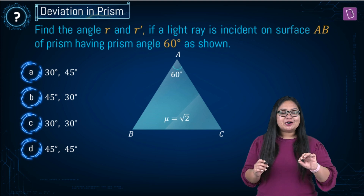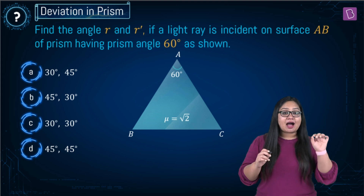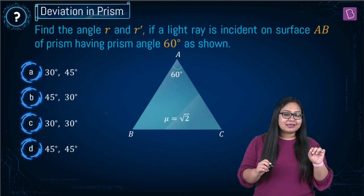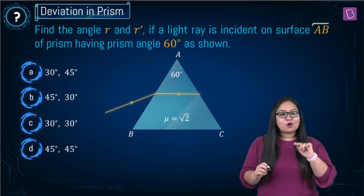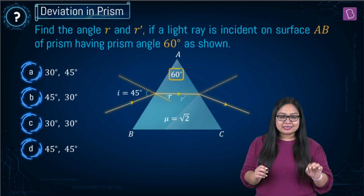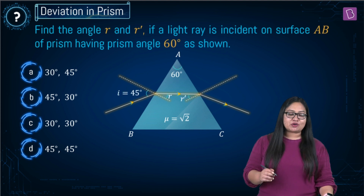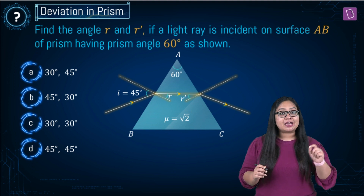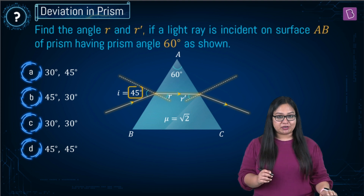Hello students! Here we have to find out the angles R and R' when a light ray incidents at the face AB of the given prism. The angle of prism is 60 degrees, the refractive index of the material of the prism is given as root 2, and the angle of incidence is given as 45 degrees.